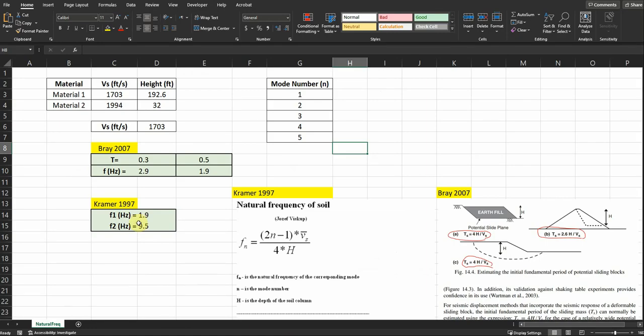Let's take a look at this example. I have a dam with two different materials, two different shear wave velocities and two different heights. Using the Bray method with equation 2.6h, it's 2.6 times the summation of the heights divided by the shear wave velocity. We got 0.3 for the period. If we divide 1 by the period, we get the fundamental frequency of 2.9.